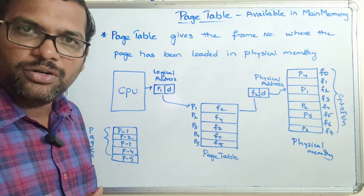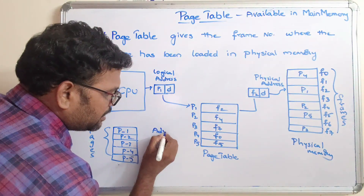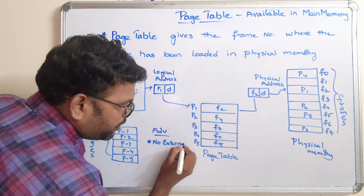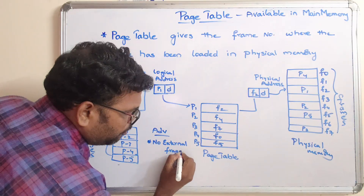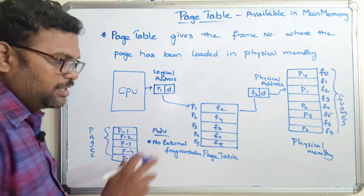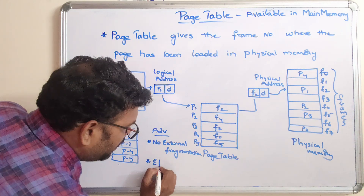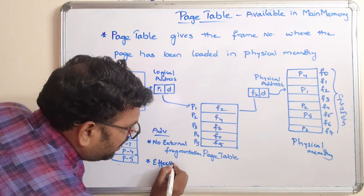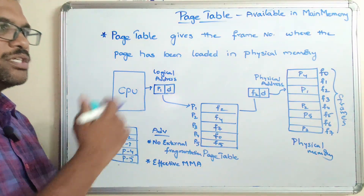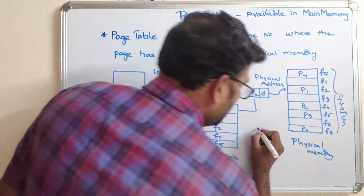The advantages of the page table: first, there is no external fragmentation, which was the major drawback in contiguous memory allocation — that does not happen here. Second, it provides effective memory management and an effective algorithm to convert the logical address to the physical address.